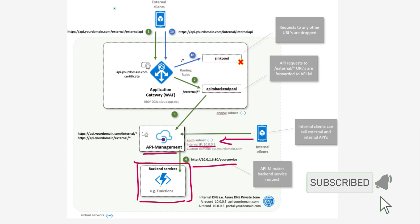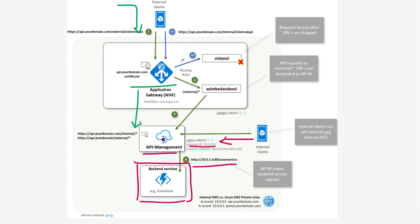Apart from that, we have external customers — partners and vendors — who would like to access our APIs exposed through API management. But since our API management is not exposed over the internet, we have an application gateway in place. The application gateway is a front-facing component protecting our API management. Anybody trying to access the APIs must route traffic via the application gateway, which then forwards the traffic to the API management.